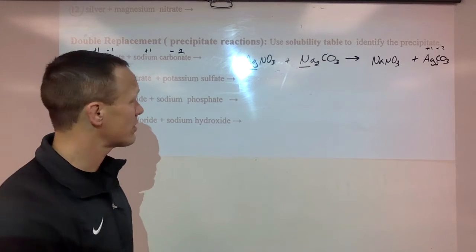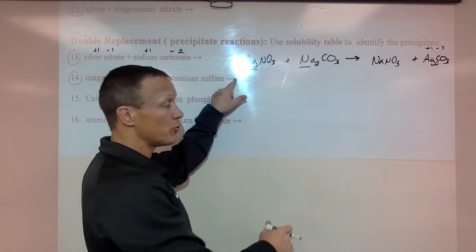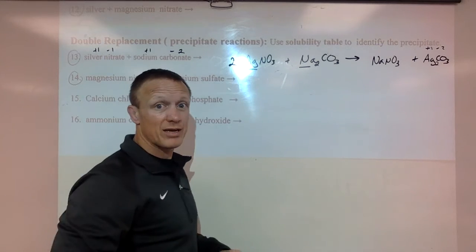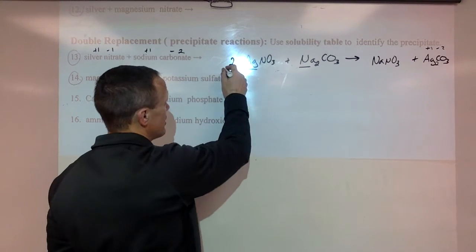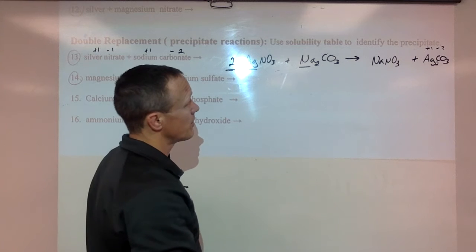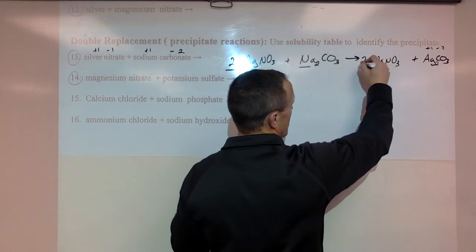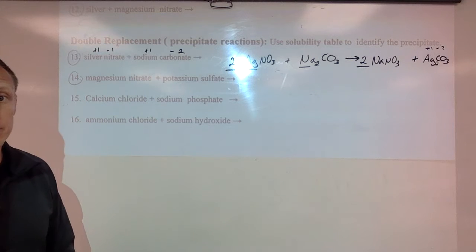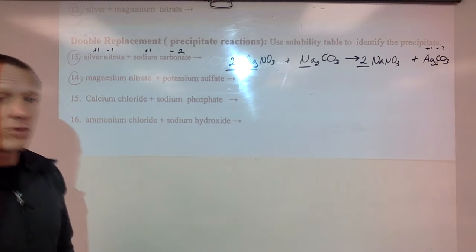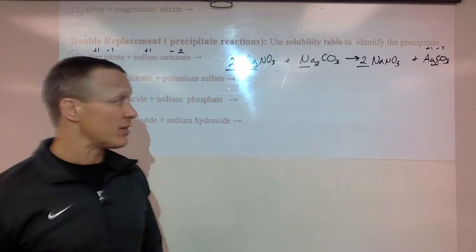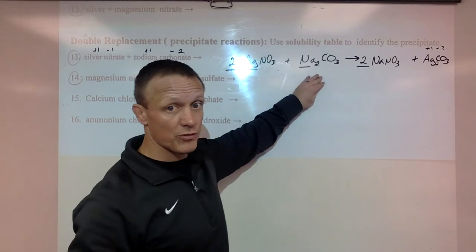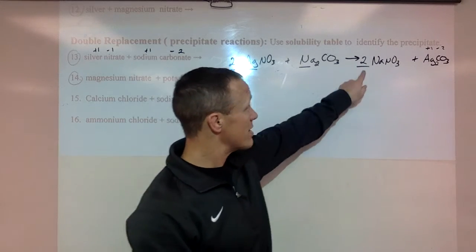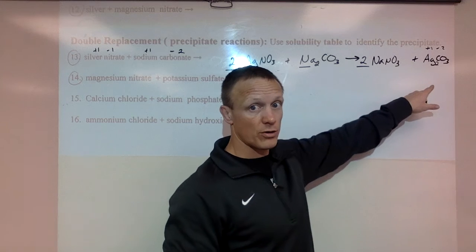Now we can go through and balance it. Sorry you can't see this very well. We need to put a two. I can't see it at all. I need to put a two in front of that Ag right there. And a two in front of this to get our Na's to two. Now I always make you identify the precipitate. So remember these things are being used in the reaction. They're away. They're gone.